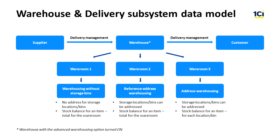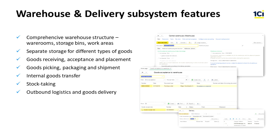The warehouse and delivery subsystem is responsible for inventory storage and logistics management. This subsystem helps to manage the delivery from the supplier to our warehouse and from our warehouse to the customer. It is also used for warehouse management. Warehousing in 1C ERP can have a simple or complex structure with a division into warehousing areas. We can apply reference address warehousing and monitor stock balance in bins and stock balance for an item for each location and bin. The warehouse subsystem was created according to WMS — Warehouse Management Systems — principles.